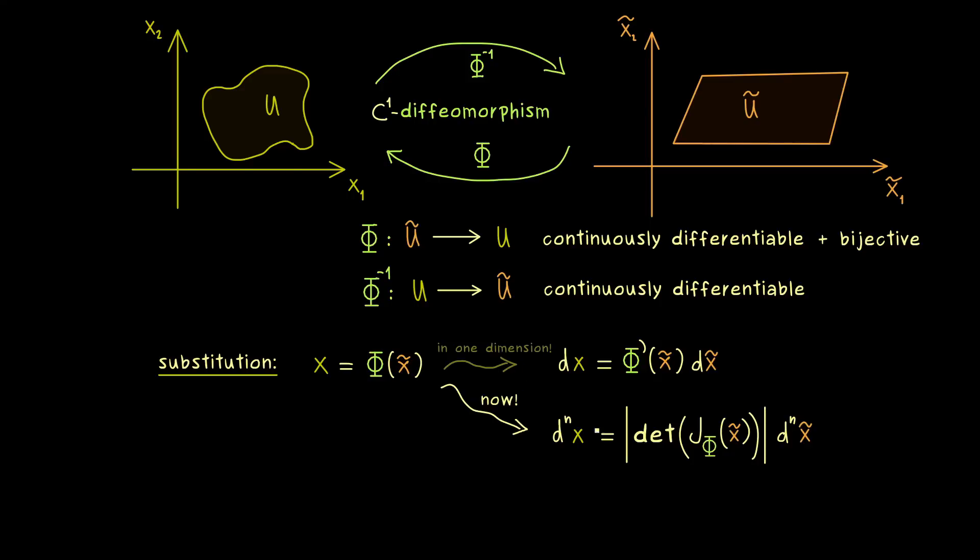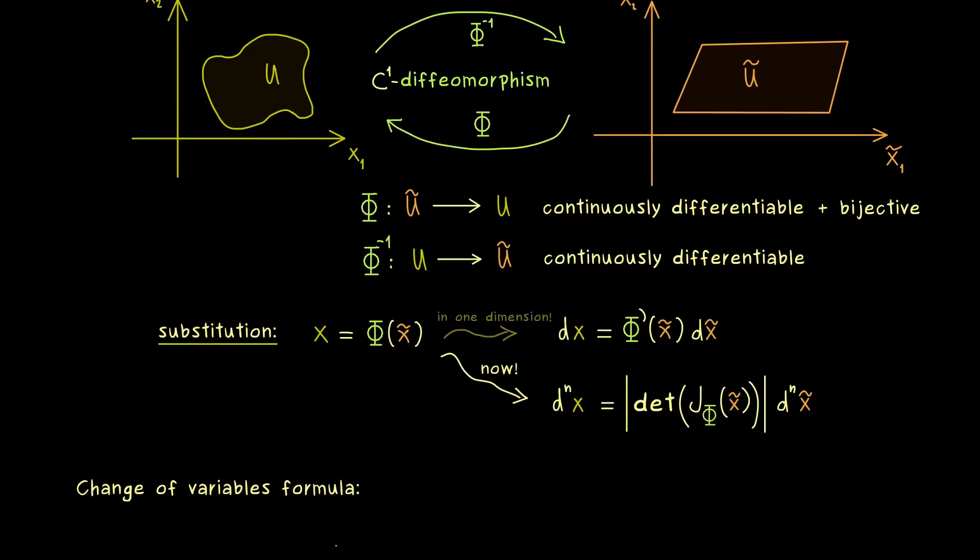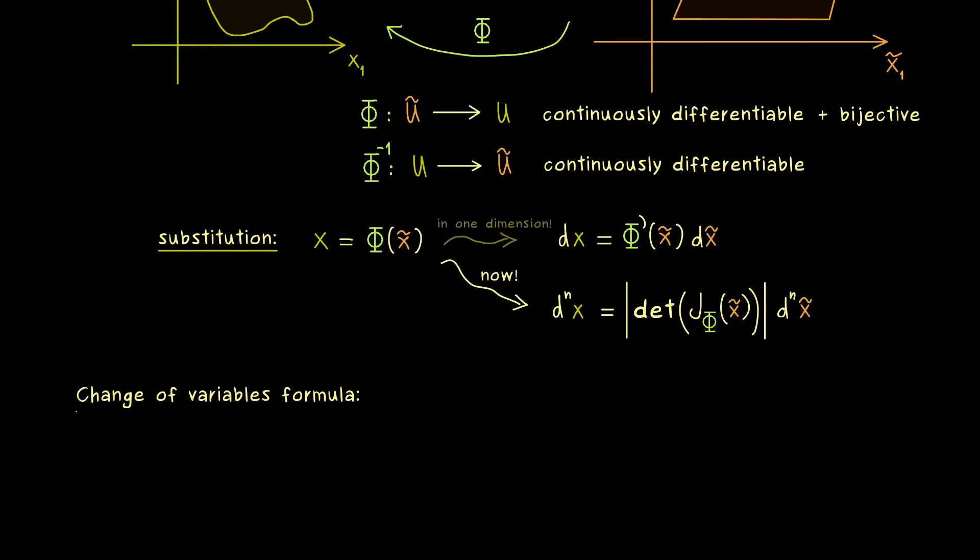This is how you can remember the formula for calculating an integral while changing the coordinates with a function Phi. And you already know this is what we call the change of variables formula in n dimensions. Hence for calculating the integral of f over the set U we can also integrate another function over the set U tilde.